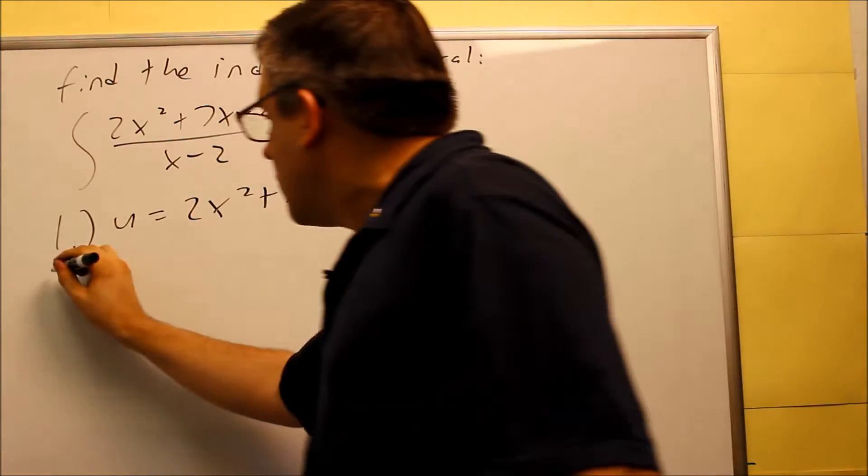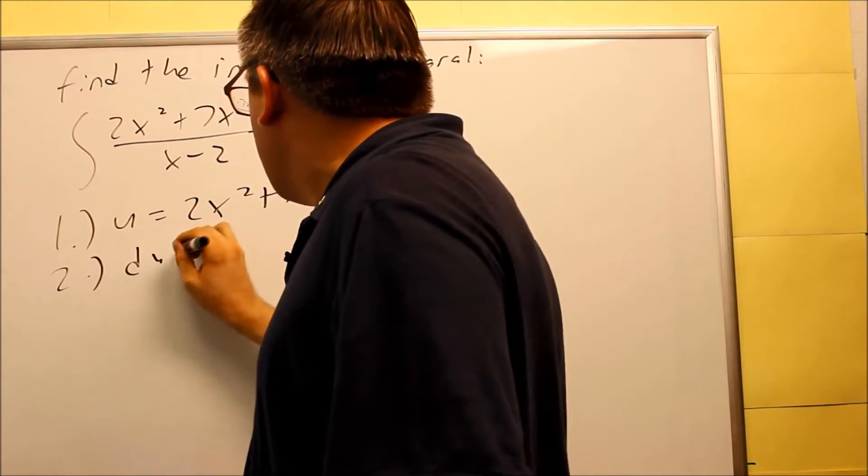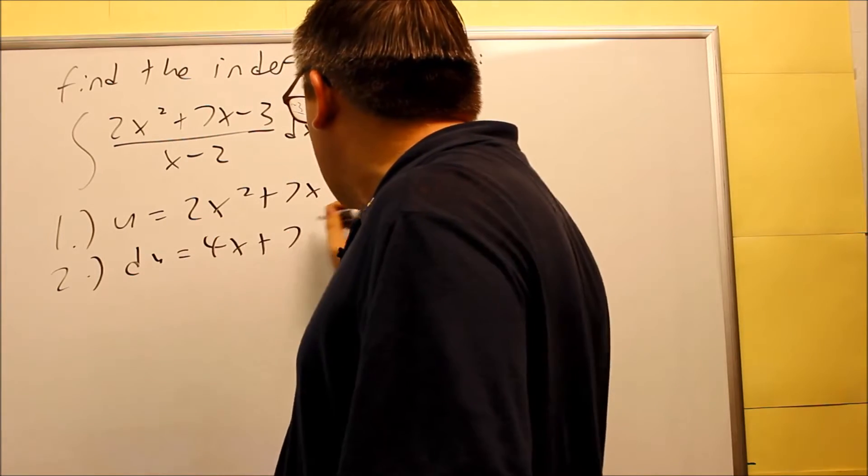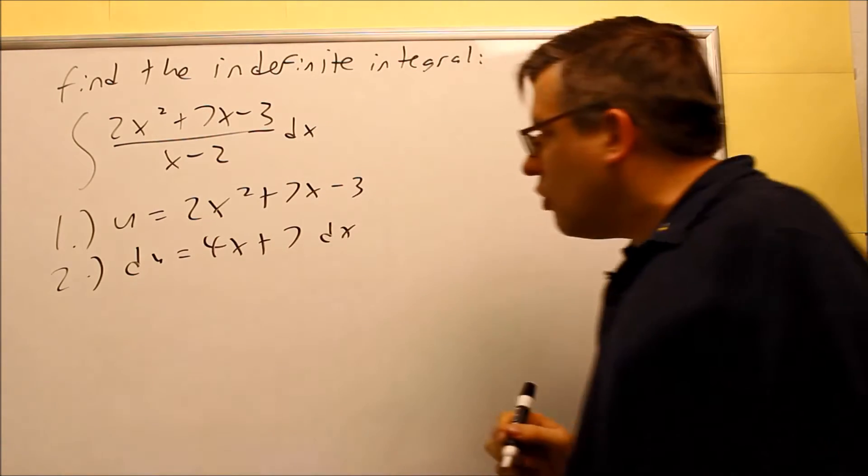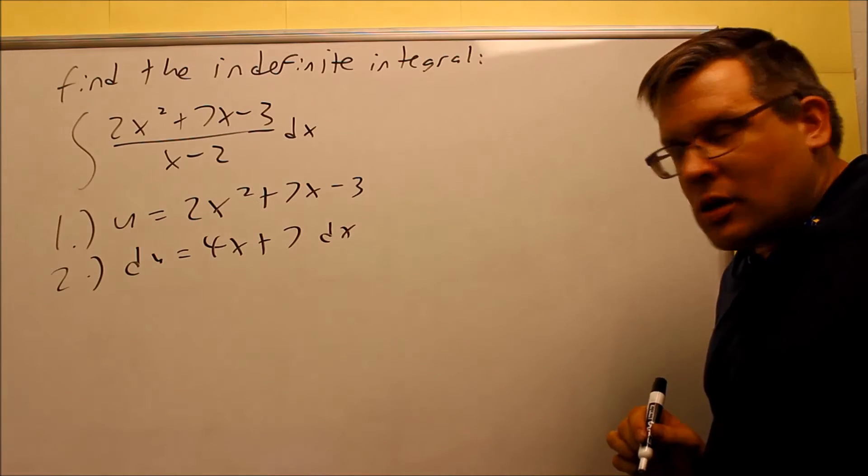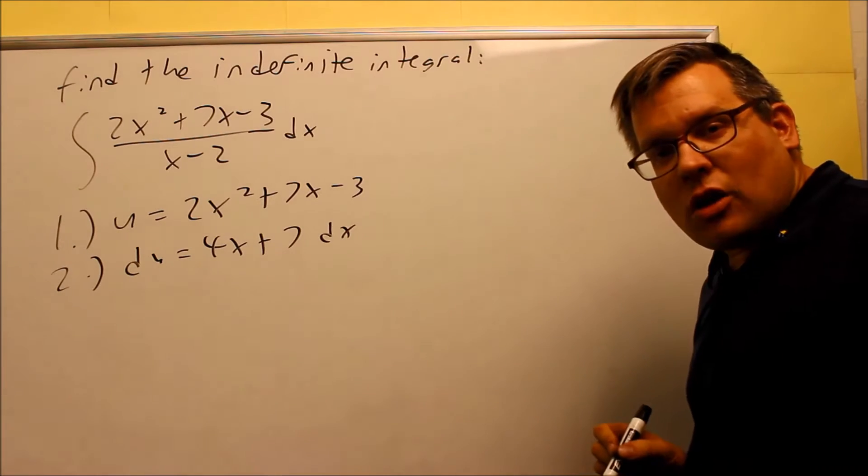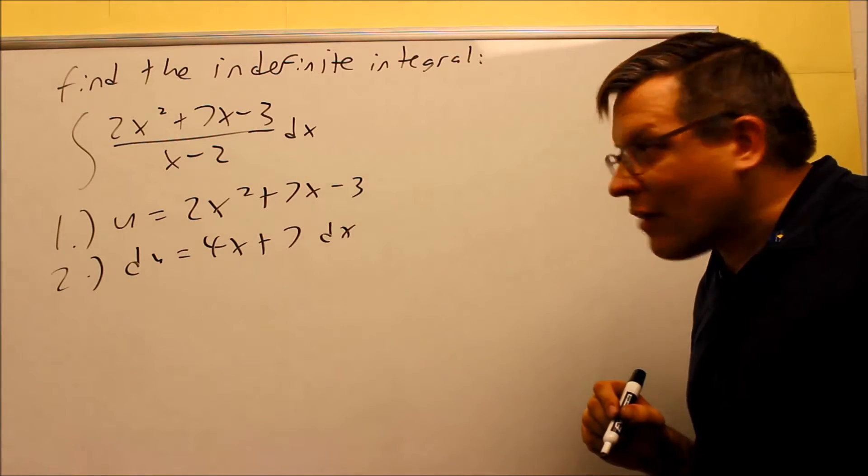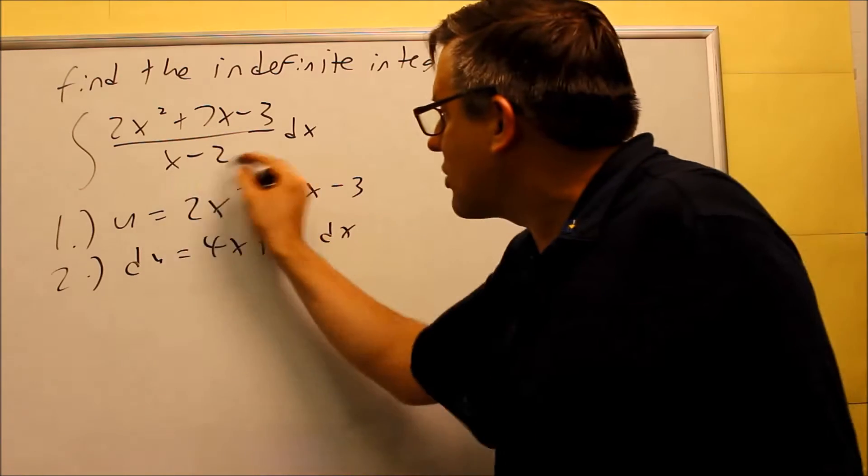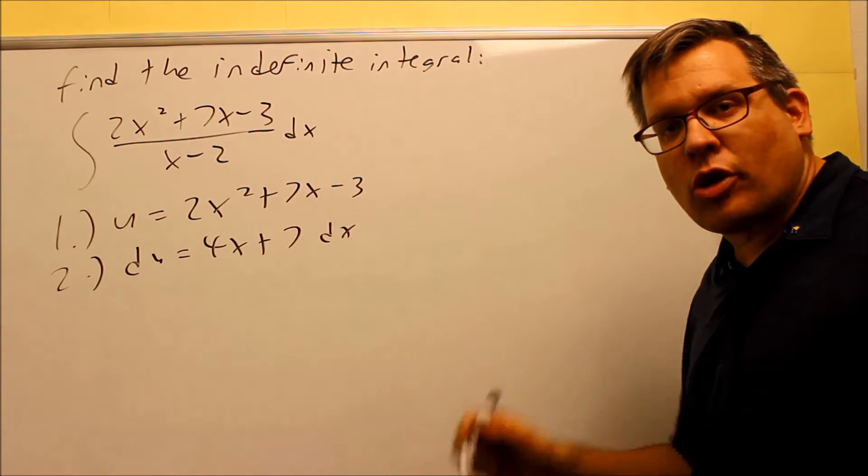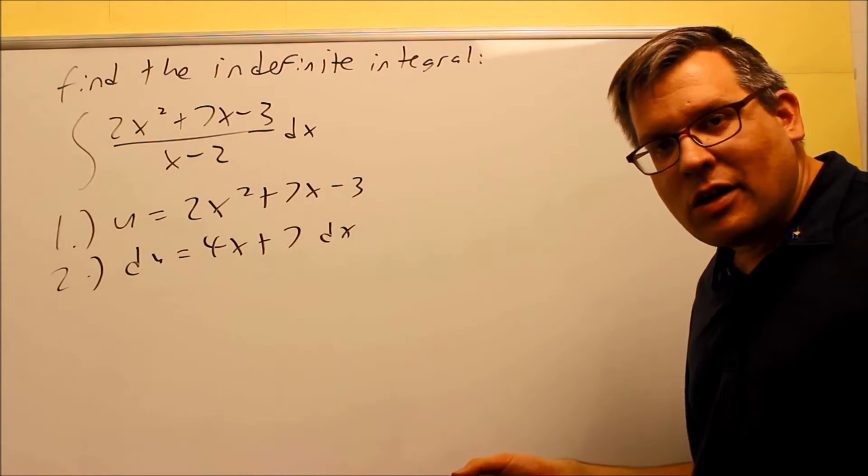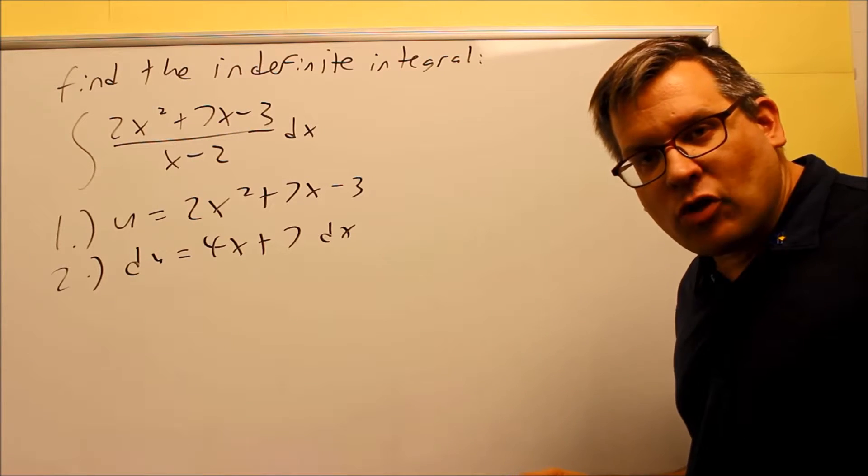Let u equal the top one, and then for step two, I would do du equals 4x plus 7, and then we run into a problem here. If I solve for dx, the problem is that I'm not going to be able to cancel off the x minus 2, which means that when I substitute everything back in again, I'm not going to have all u's left over.